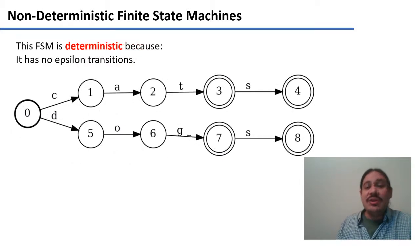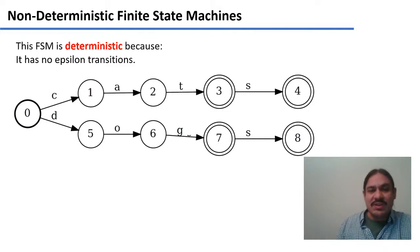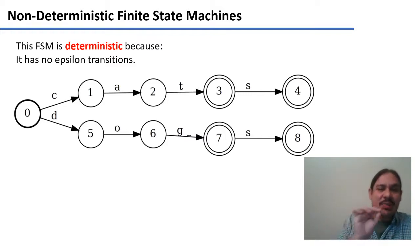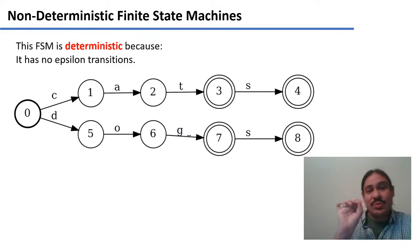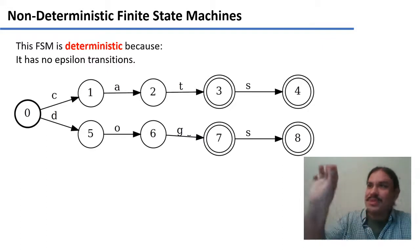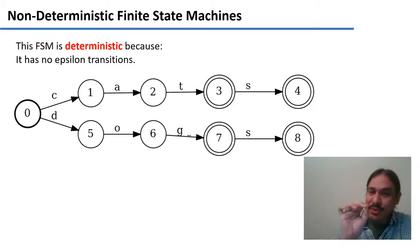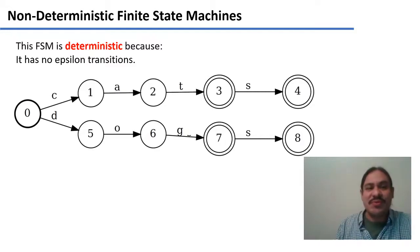Any non-deterministic finite state machine can be transformed into a deterministic one. This is the same finite state machine but without the epsilons. To get the word cat, you would now go from zero, one, two, three, and have that as the end state for the singular. And if you want the plural, you go one more step from three to four.